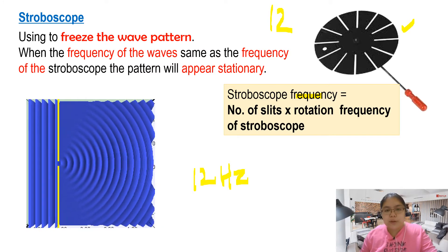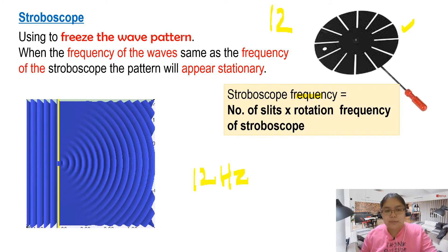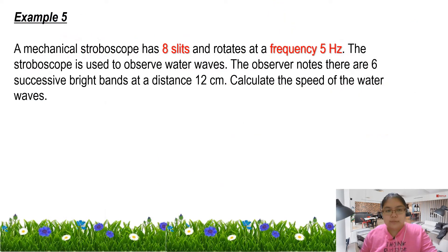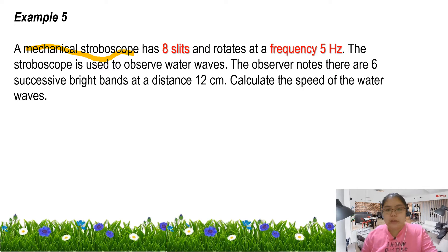Let's see the example question — Example 5. They are using the mechanical stroboscope. If we're using a stroboscope, that means you need to use the formula. It has 8 slits, and also rotates at 5 hertz. So that means you cannot just say frequency is 5. You must multiply — your new frequency must be 8 multiplied by 5, that is 40 hertz.